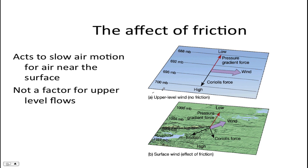This top part of the diagram shows upper level wind. There is little to no frictional force impacting this wind, therefore it can travel at great speeds. The only forces impacting this wind are the pressure gradient force and the Coriolis force.